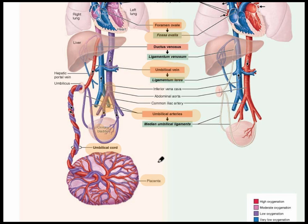The last adaptation is for the liver, called the ductus venosus. The ductus venosus, at birth, closes to become a ligament called the ligamentum venosum.